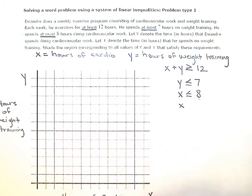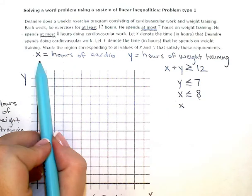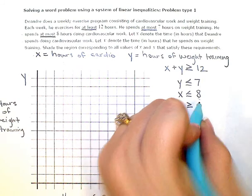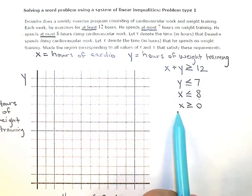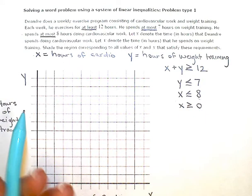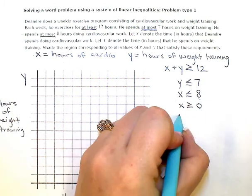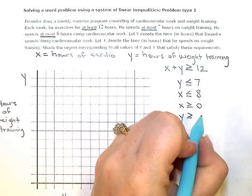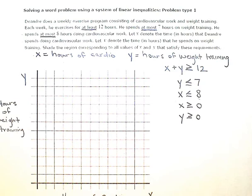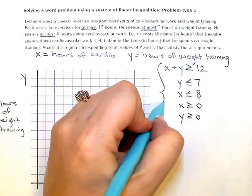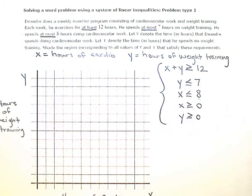So I have to add a couple more constraints here. My cardio, X, is going to be greater than or equal to zero. Equal would mean I did no cardio that week. And anything greater would be what I did. And my weight training also has to be greater than or equal to zero. So I actually have a system that I'm going to graph of five different inequalities here.